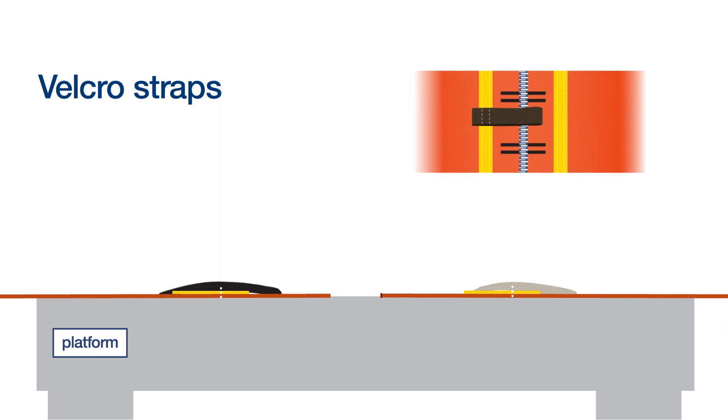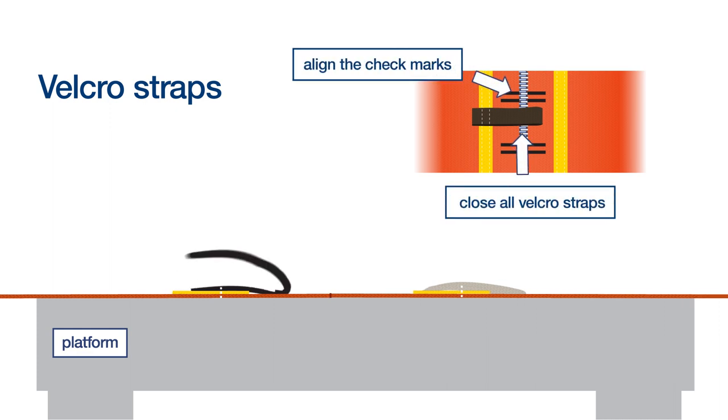Velcro: the velcro is on the same side on which you will seam the fabric. After pulling the fabric ends close to each other, align the check marks, close all velcro straps and check the alignment again.